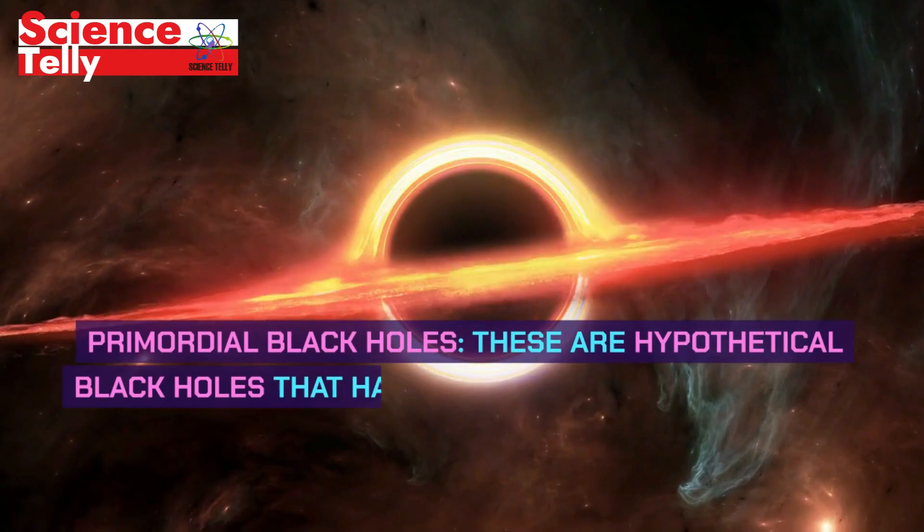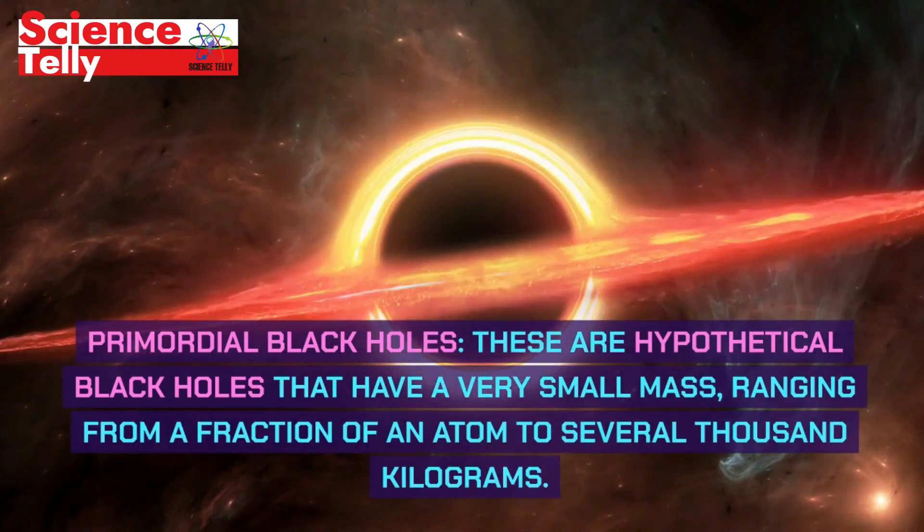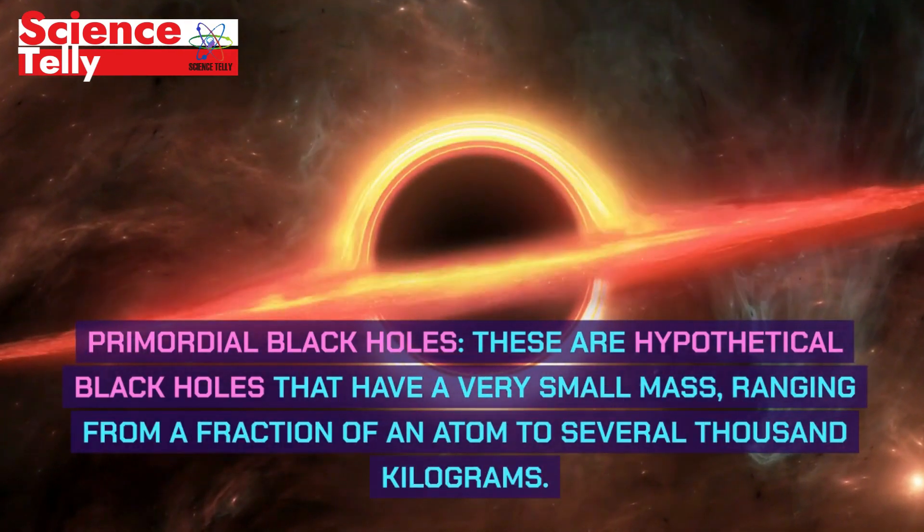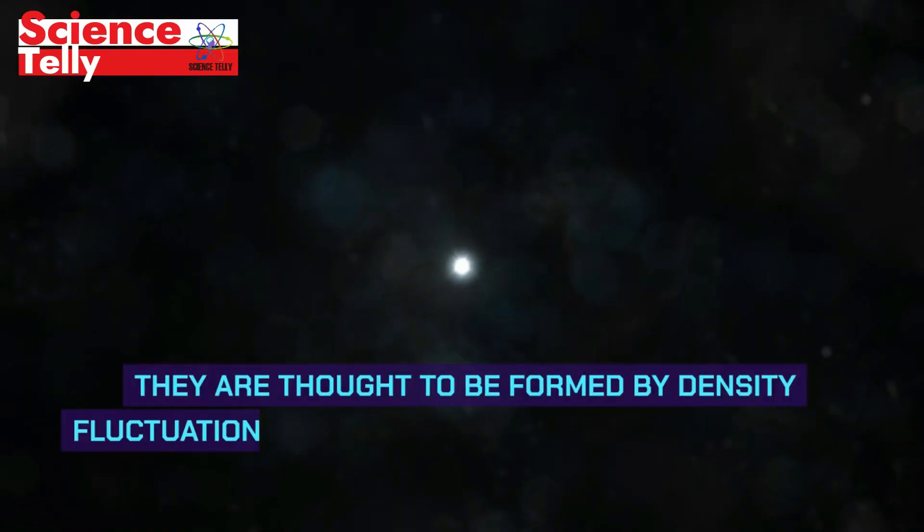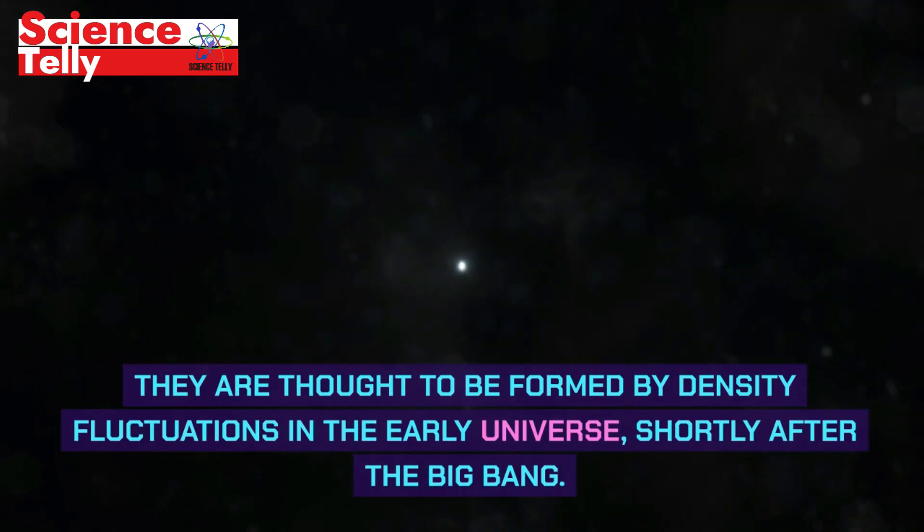Primordial black holes. These are hypothetical black holes that have a very small mass, ranging from a fraction of an atom to several thousand kilograms. They are thought to be formed by density fluctuations in the early universe, shortly after the Big Bang.